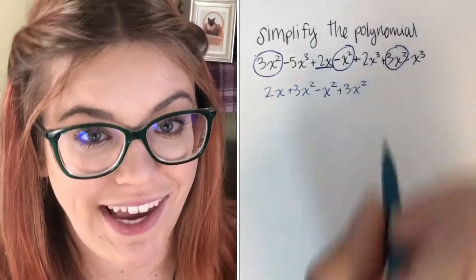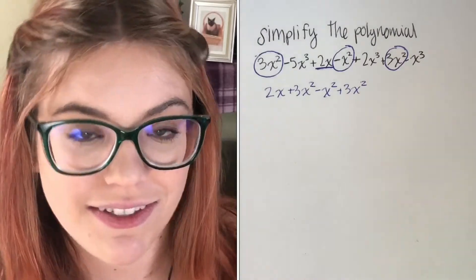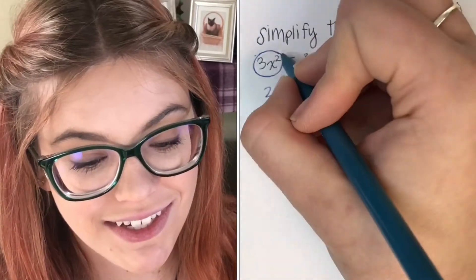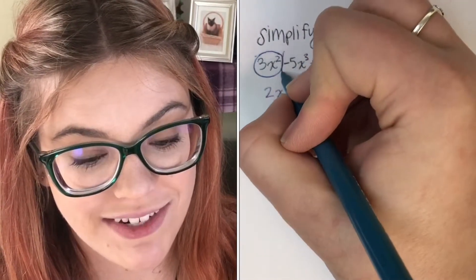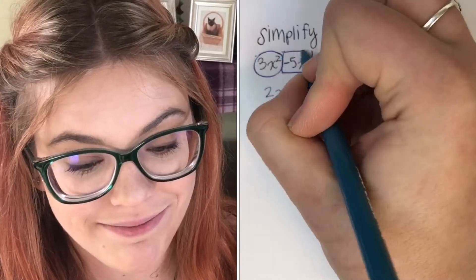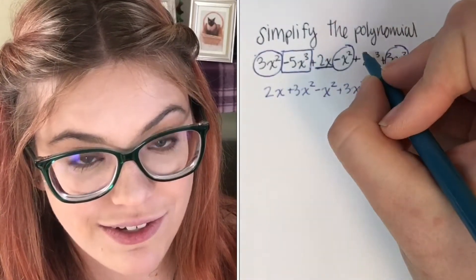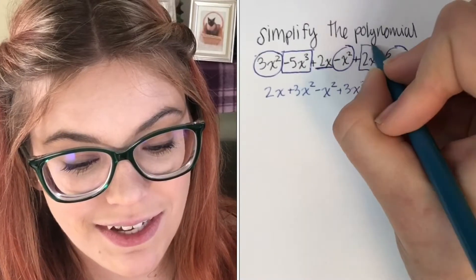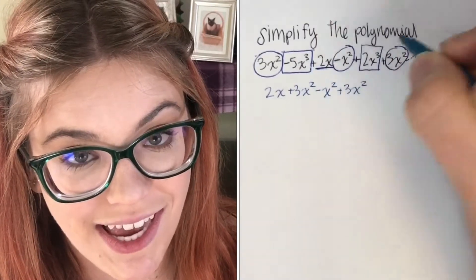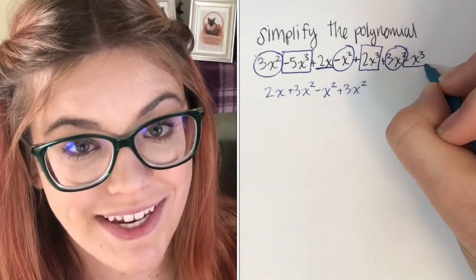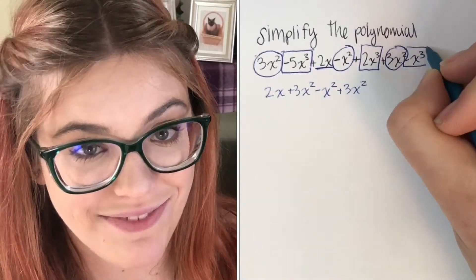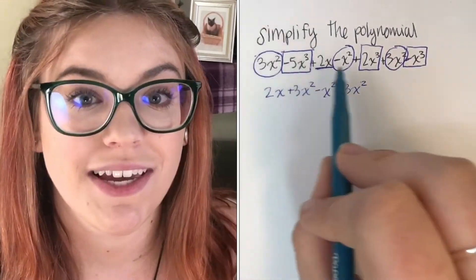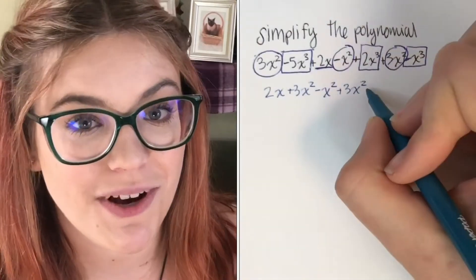Now let's go to the x cubed terms — I'm gonna draw boxes around these. So we have negative 5x cubed plus 2x cubed minus x cubed. Pay attention to the negative values. If you accidentally switch something from a negative to a positive, that's gonna get you the wrong answer.